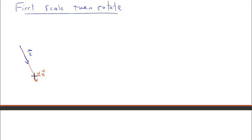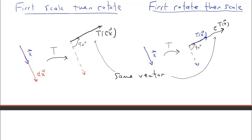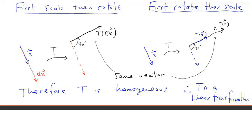For homogeneity: first scale x by scalar C to get C times x, then rotate 90 degrees counterclockwise to get T of C times x. Or first apply T to x — rotating x by 90 degrees counterclockwise to get T of x — then scale by C to get C times T of x. We get the same vector, so T is homogeneous. Using purely geometric means we've shown T is additive and homogeneous, and therefore T is a linear transformation. We didn't need a matrix — only the geometric action of T on vectors.